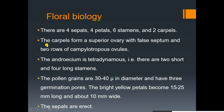In floral biology, there are four sepals, four petals, six stamens, and two carpels. The carpels form a superior ovary with a false septum and two rows of ovules. The androecium is tetradynamous — two short and four long stamens. The pollen grains are 30 to 40 microns in diameter and have three germination pores.